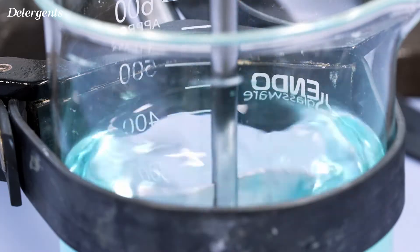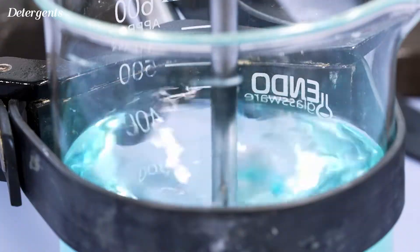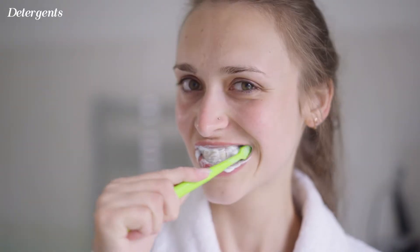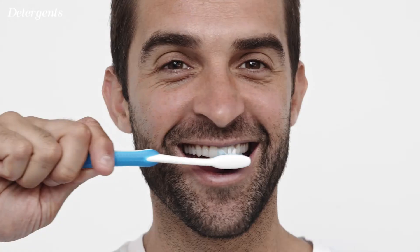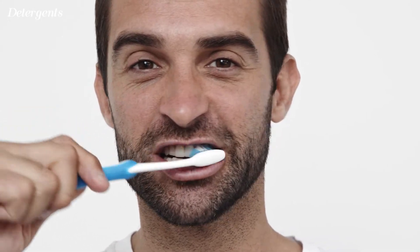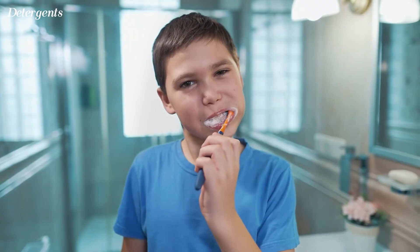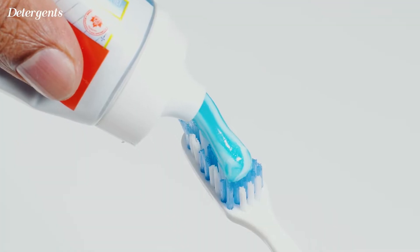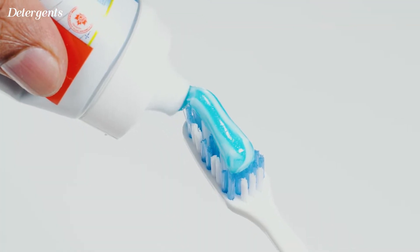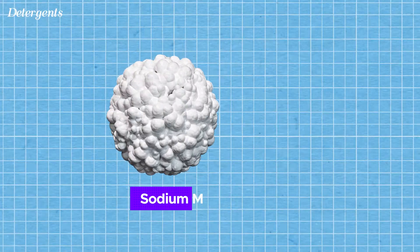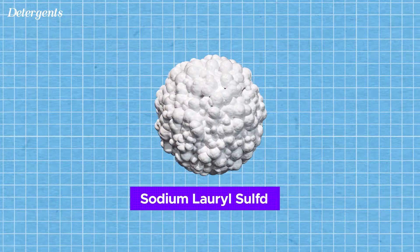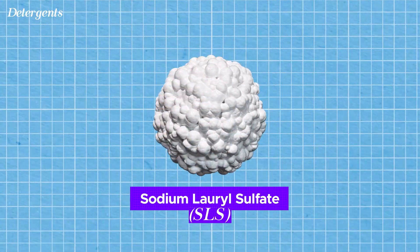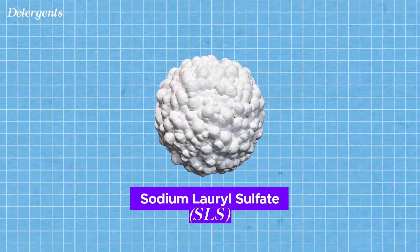As for detergents or surfactants, that's the stuff that makes toothpaste foam in your mouth. Not all toothpastes foam, but it's said to help distribute the paste more effectively. The most common detergent in toothpaste is sodium lauryl sulfate, which is also thought to have antimicrobial benefits.